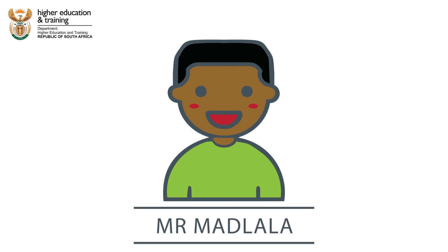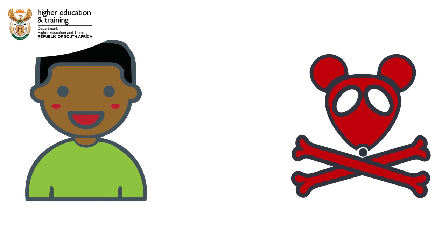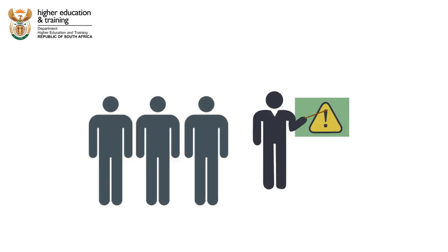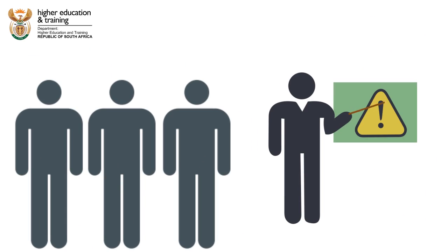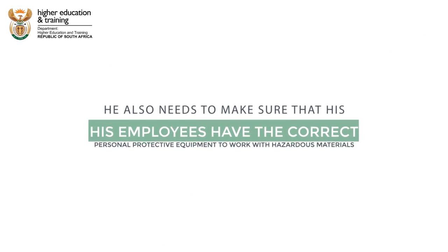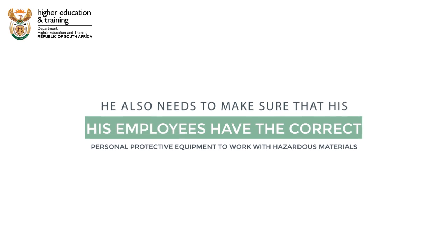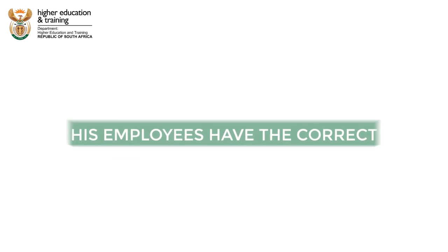Mr. Matlala owns a factory that makes rat poison. He must make sure that his employees receive training on how to work with hazardous materials. He also needs to make sure that his employees have the correct PPE to work with hazardous materials.